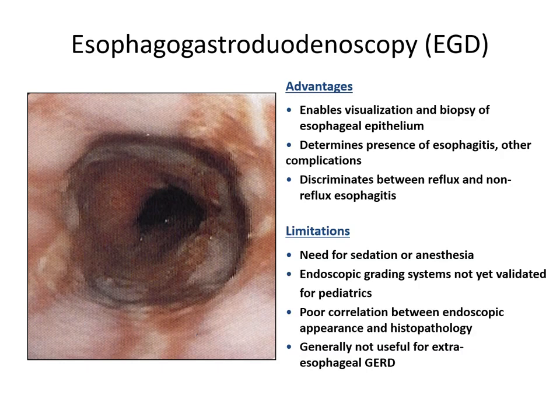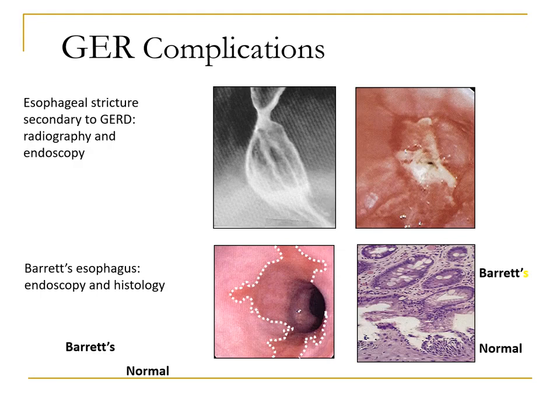There are limitations to upper endoscopy: it is an invasive procedure, especially in children who need to be sedated or anesthetized. The grading systems for esophagitis used in adults are not well-validated for the pediatric age group. There is poor correlation between endoscopic appearance and histopathology, and it is generally not useful for extraesophageal GERD, as there is poor correlation with what's happening in the esophagus when patients present with respiratory complications.